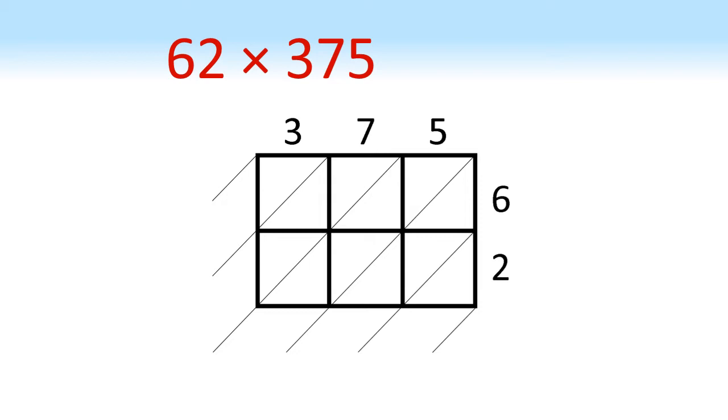To use Napier's method, we now look at each square in turn and multiply the number at the top by the number to the far right. So for the top left square, we've got 3 times 6 is 18, so we put the 1 in the top left corner and the 8 in the bottom right.